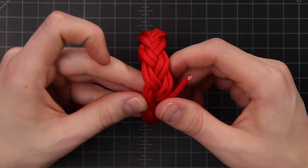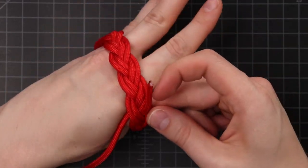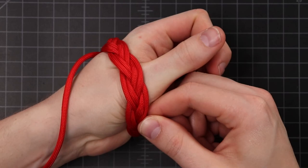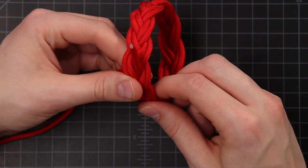Once we're done weaving that first color, it should look about like this. It should still fit over your hand. Now's the time to loosen it up if it doesn't. Mine just barely does. It'll get a little bit tighter as we add that third row, but not by much.